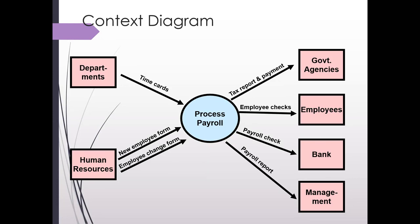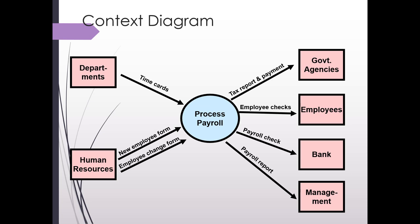This is showing a context diagram. A couple of things to note: first, there is only one circle. Here we have a process called 'Process Payroll,' so we only have one transformation process that describes the entire process — this is why it's very high level. You'll also notice there are no numbers in the context diagram circles. Since it only has one circle, we aren't going to put any number.